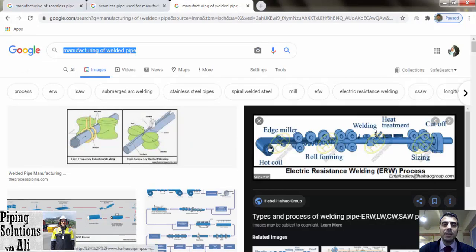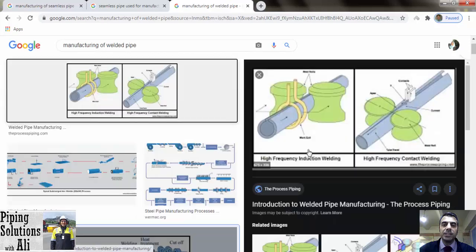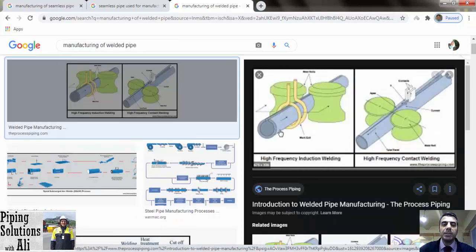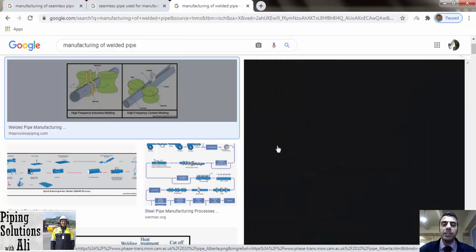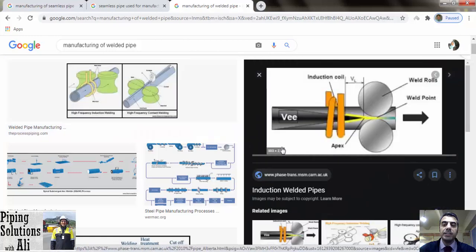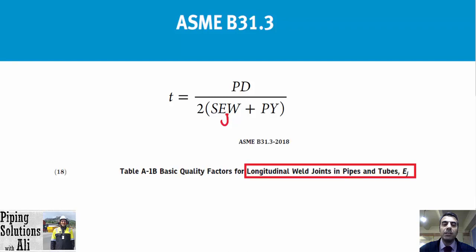Welded pipe: welded pipes are manufactured by rolling plates or coil strips into a circular section. The pipe can be welded with or without filler material. A welded pipe can be manufactured in large sizes without upper restriction. Welded pipes are cheaper compared to seamless pipe and also weaker due to the weld.